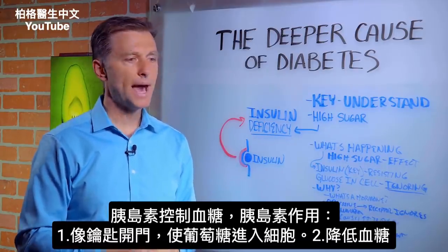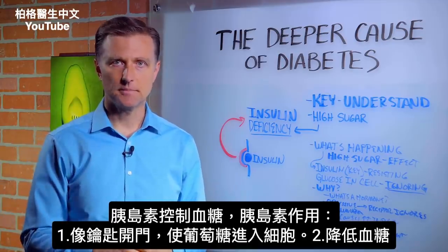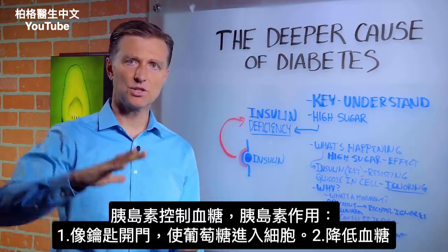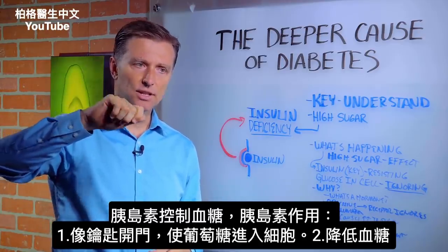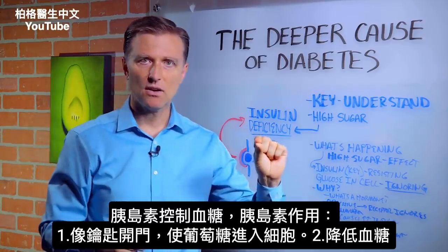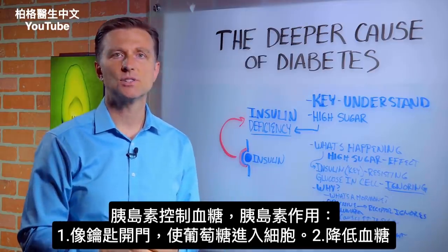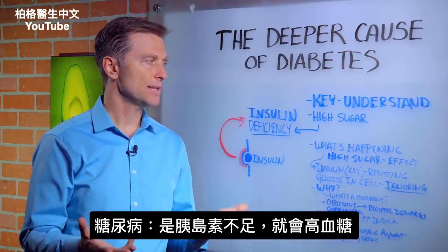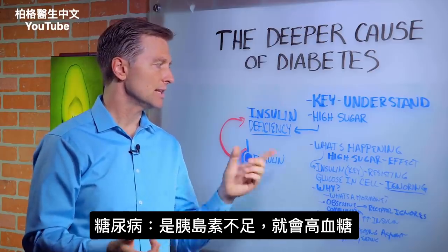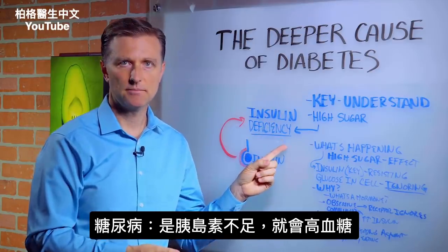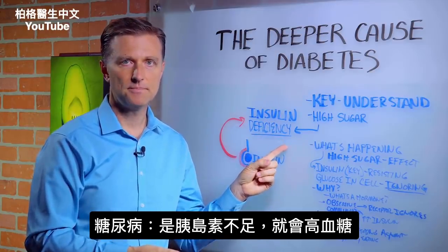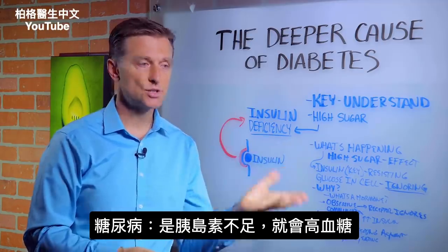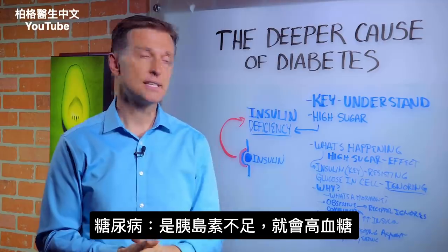What controls the balance of sugar is insulin. Insulin has many functions, but one main function is to act as a cellular key to allow glucose to go into the cell. Another function is to lower sugar. So the obvious thing is that diabetes really is an insulin deficiency — that's really what's causing it, because if there wasn't enough insulin, the sugar is going to go high.